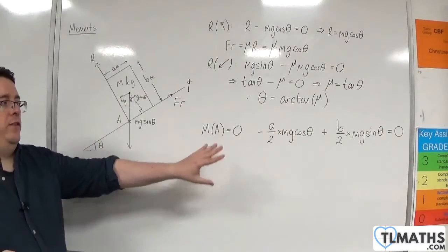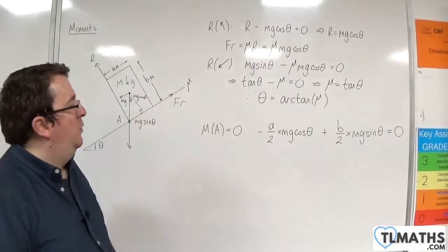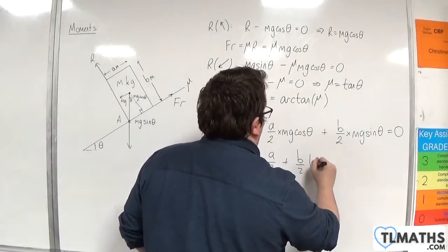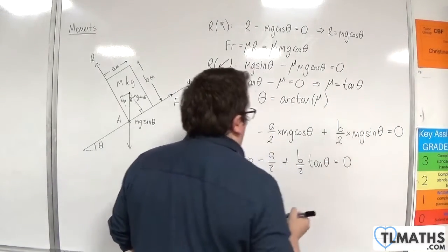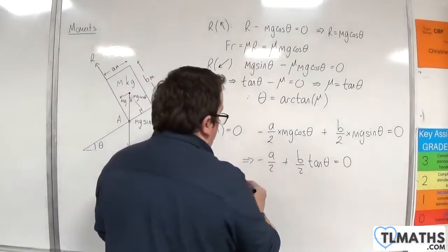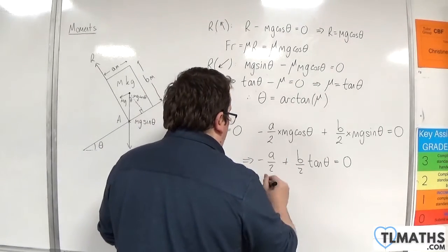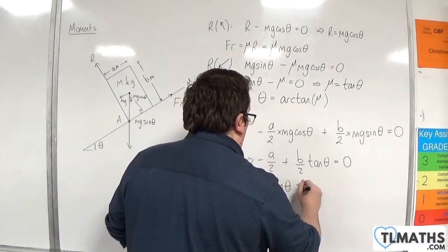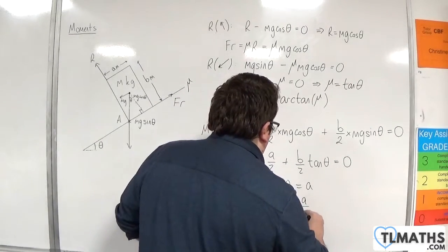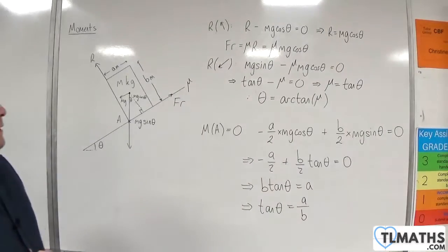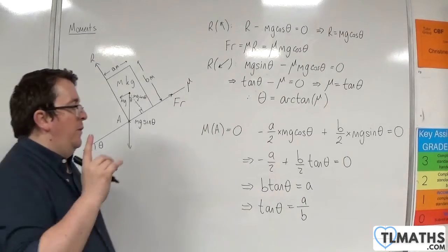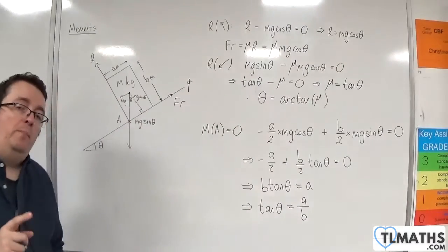So if we divide through by mg cosine theta, just like we did before, we'll get minus A over 2 plus B over 2 tan of theta is equal to zero. So if we multiply through by 2 and add A to both sides, we'll have B tan theta equals A. So tan theta will be equal to A over B. We've got mu is equal to tan theta when it's on the point of slipping, and we've got tan theta is equal to A over B when we're on the point of toppling.